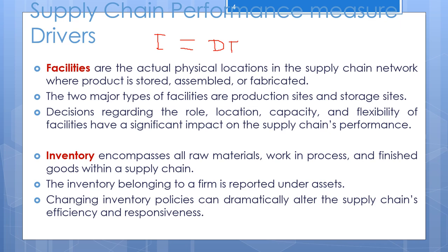The next component of inventory decisions is level of product availability — the fraction of demand that is served on time from product held in inventory. A high level of product availability provides a high level of responsiveness but increases cost because a lot of inventory is held but rarely used. A low level of product availability lowers inventory holding cost but results in a higher fraction of customers who are not served on time. The basic trade-off is between the cost of inventory to increase product availability and the loss from not serving customers on time.